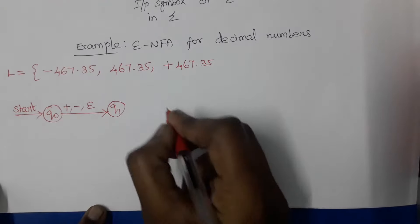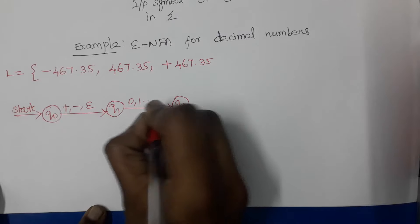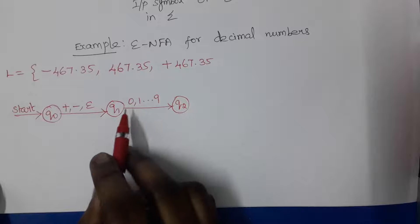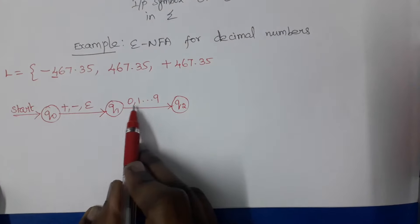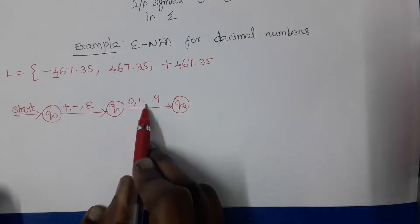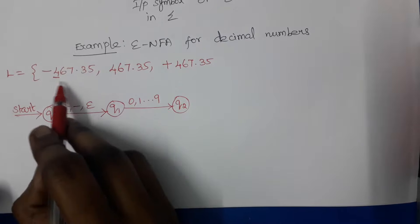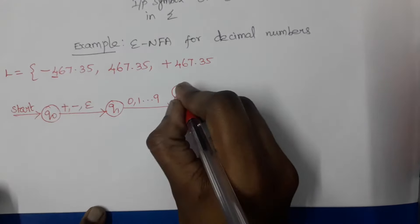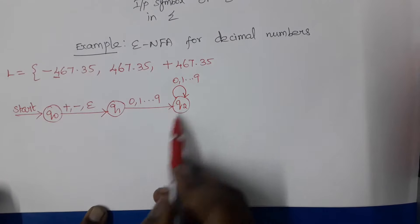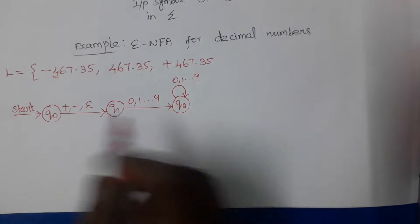The sign is followed by one or more digits. For representing digits we use zero to nine. For one digit, the state changes from q1 to q2, labeled zero, one, up to nine. So reading one digit changes state from q1 to q2. After one digit, there may be more digits, so we draw a self-transition on q2 labeled zero to nine — a single digit followed by any number of digits.